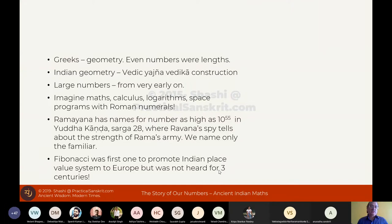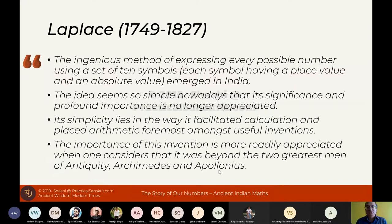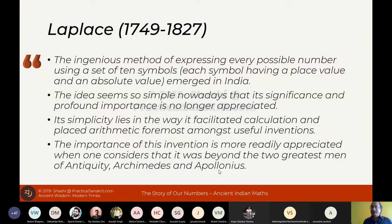Fibonacci was the first to promote the Indian place value system and ten-digit number system to Europe, but was completely ignored for three centuries. Laplace, born 1749, said: 'The ingenious method of expressing every possible number using a set of 10 symbols emerged in India. The idea seems so simple nowadays that its significance is no longer appreciated. Its simplicity lies in the way it facilitated calculation and placed arithmetic foremost among useful inventions. The importance of this invention is more readily appreciated when one considers that it was beyond the two greatest men of antiquity, Archimedes and Apollonius.' Yet we hold Archimedes and Euclid highly — how many Indian mathematicians do we hold in high regard?